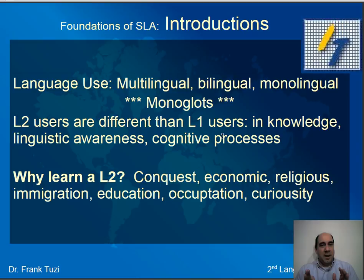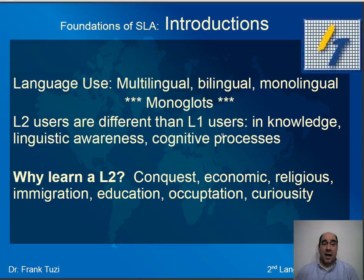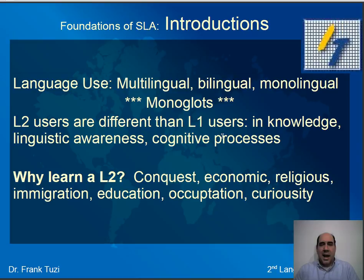Bilinguals and multilinguals can understand perspectives probably better than monolinguals, because a monolingual only knows their own culture and language. As a bilingual or multilingual, you have to step outside of where you are and see it from a different language, culture, and perspective. There's also a difference in linguistic awareness — they know more about language and how it's used. The cognitive processes going on in the brain are different too. Whether those processes for multiple languages are overlapping or separate is still unknown.